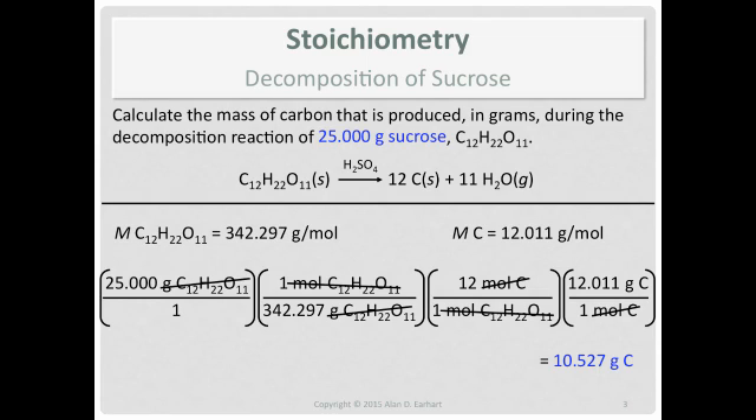What you could do to check your work, to prove to yourself conservation of mass from a calculation point of view, rework this calculation and instead of mass of carbon, calculate the mass of water produced. Then add the mass of water produced to the mass of carbon. If you do that calculation, you should try it, you get 14.473 grams of water.